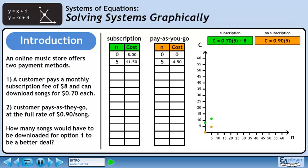Purchasing 5 songs under the subscription plan will cost $11.50. That includes the $8 subscription fee and $3.50 for the songs. Purchasing 5 songs under the pay-as-you-go option will cost $4.50.